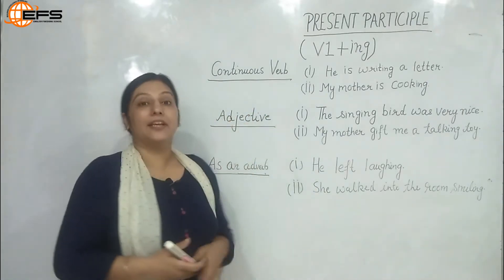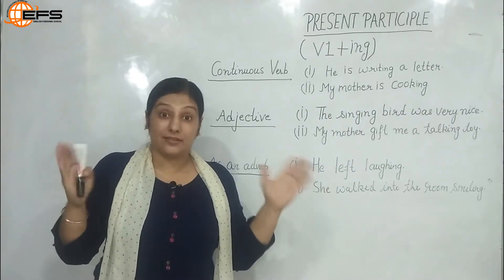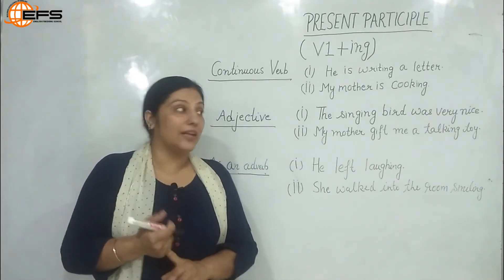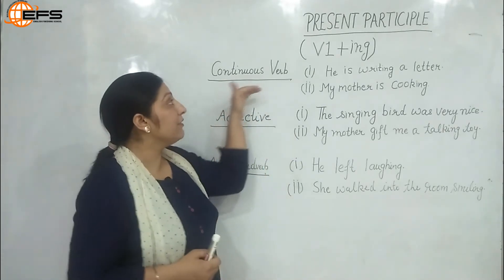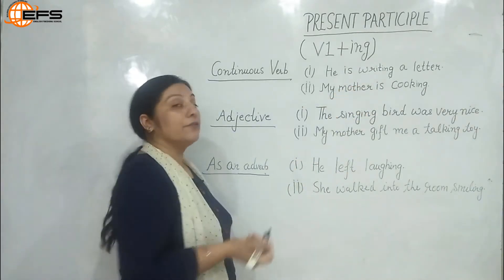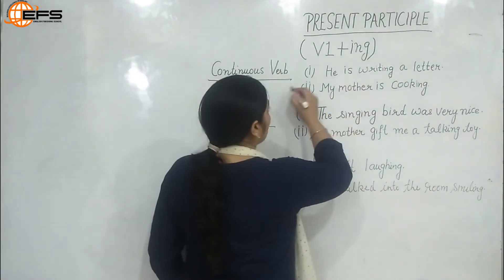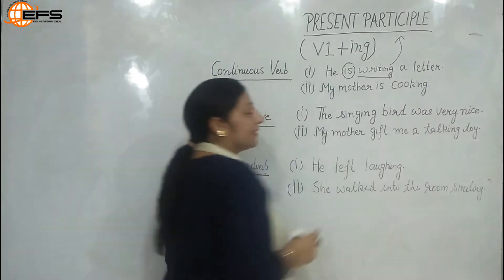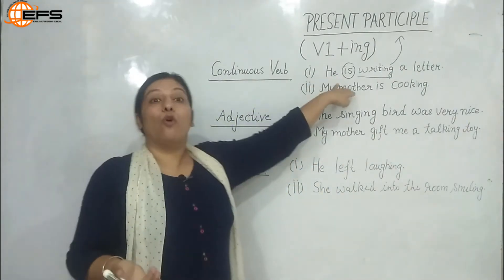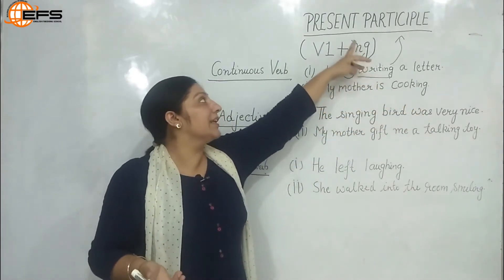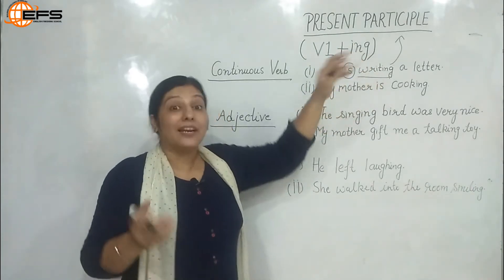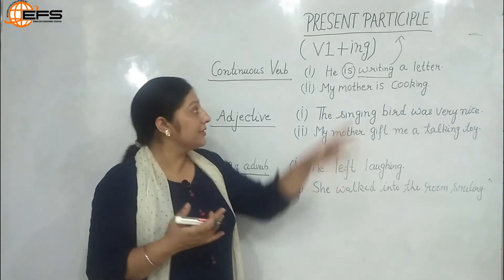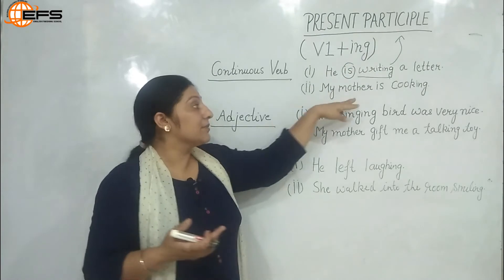Let's look at how present participle is used as a verb. In continuous tenses — present continuous, past continuous, and future continuous — whenever we use an -ing verb, that is present participle. For example: 'He is writing a letter' — here 'is' is the finite verb and 'writing' is the non-finite verb, an example of present participle. The sentence can also be in the past: 'He was writing a letter' — 'writing' is still present participle.